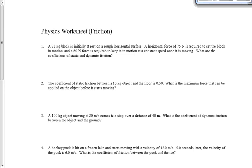Question number one: a 25-kilogram block initially at rest — so it's sitting there in static equilibrium — on a rough horizontal surface. We apply a force of 75 Newtons to it, so maybe not static equilibrium anymore. That 75-Newton force is required to set the block in motion; 60 Newtons is required to keep it in motion once we've got it going. What does that 75-Newton force represent in this question?